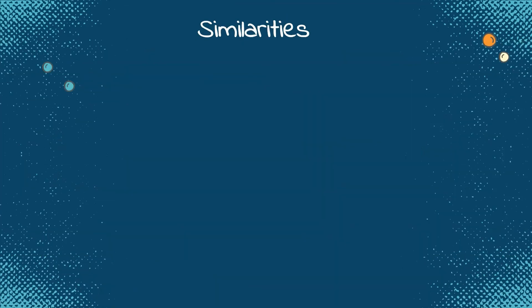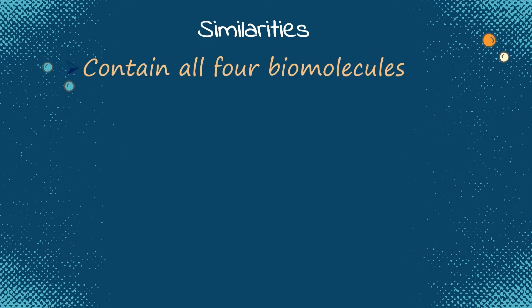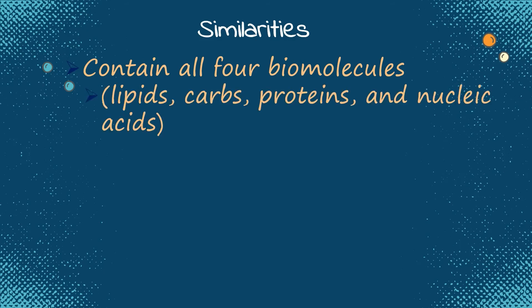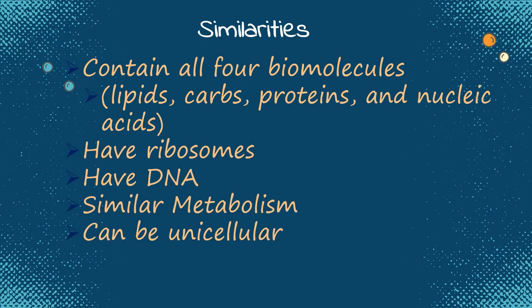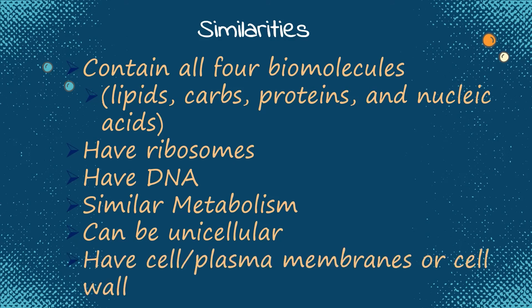What about the similarities between prokaryotic cells and eukaryotic cells? First, they both contain all four biomolecules: lipids, carbohydrates, proteins, and nucleic acids. They both have ribosomes. They both have DNA. They have similar metabolism. They can both be unicellular. And they both have cell or plasma membranes or a cell wall.